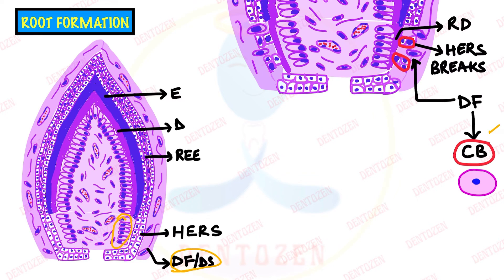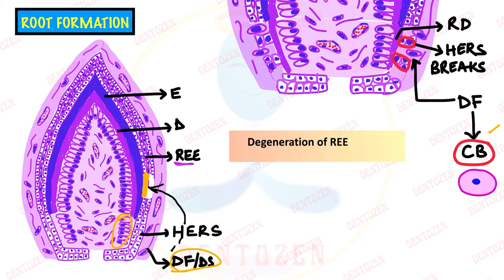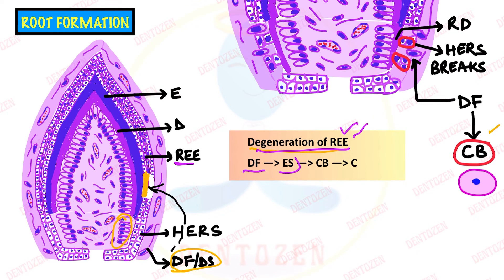What can go wrong? If the reduced enamel epithelium degenerates before its normal time - that is, before the tooth erupts - the dental follicle connective tissue cells will come into contact with the enamel surface, transform into cementoblasts, and lay down cementum over the enamel. So cementum overlaps enamel. That is how overlap junction forms: early degeneration of reduced enamel epithelium causes dental follicle to contact enamel, differentiate to cementoblasts, and form cementum over enamel.